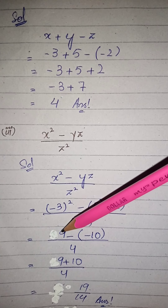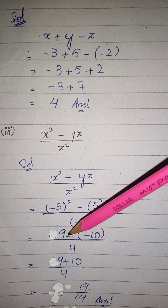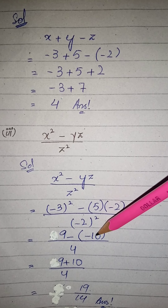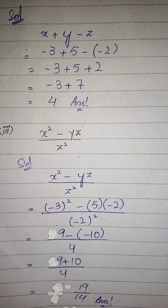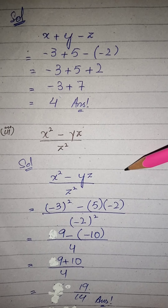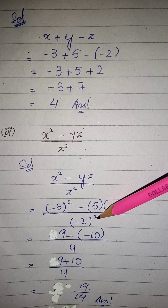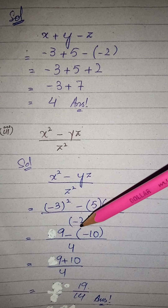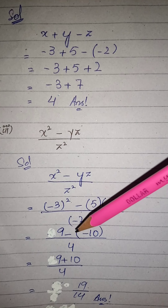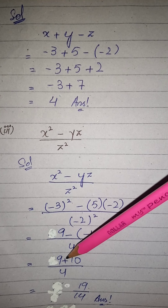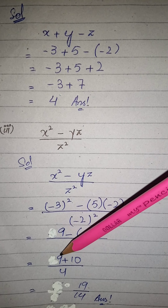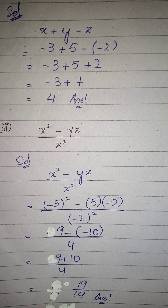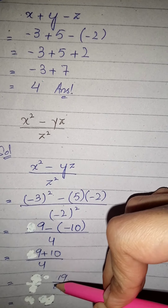minus 3 square equals 9، پھر minus اور 5 ضرب 2 equals minus 10، اور نیچے minus 2 square equals 4۔ minus minus ہوا تو plus 10۔ 9 plus 10 equals 19، نیچے 4۔ ہمارا answer ہے 19 upon 4۔